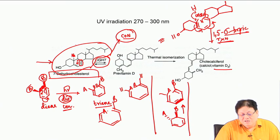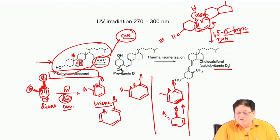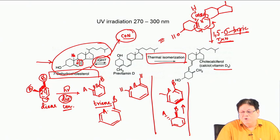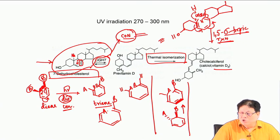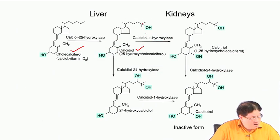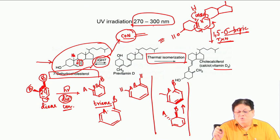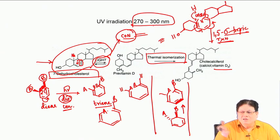The first step is photochemical — a conrotatory ring opening — followed by thermal isomerization (the 1,5-sigmatropic shift, which is not photochemical). The UV radiation required is 270 to 300 nanometers, so exposure to sunlight is required. It does not happen in visible light — it happens in long-wavelength UV light, which is present along with sunlight.